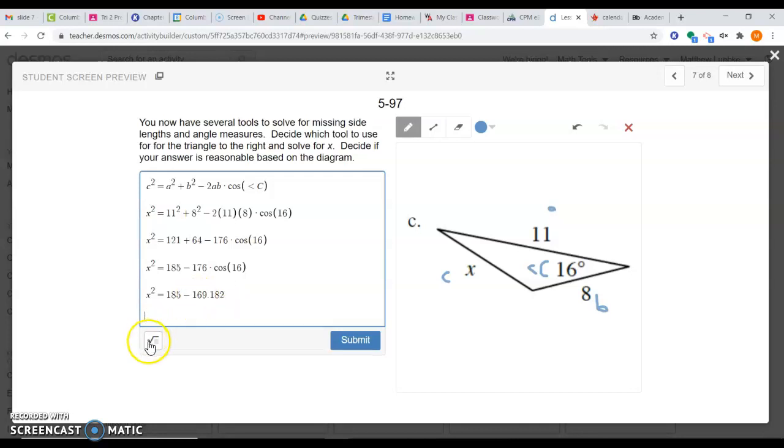So I'm here right now. I only have a couple steps left. I have x². After I do this subtraction, which is 185 - 169.182, I get 15.818. Then I have to square root both sides. Square root of 15.818 is 3.98 when it's rounded. That's the length of that side c.